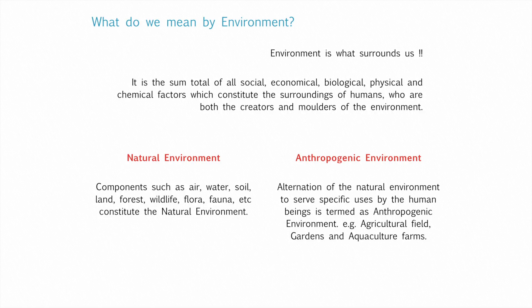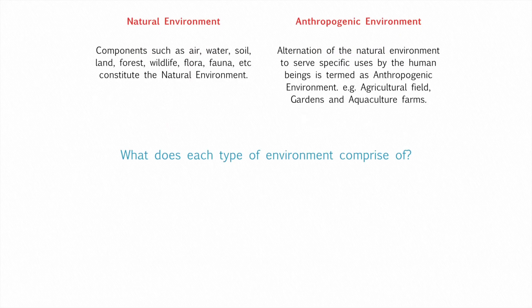Natural environment exists naturally, like air, water, soil, land, forest etc. Anthropogenic environment refers to manmade or alteration of the natural environment to serve a specific use by human beings. For example, agricultural fields, gardens and aquaculture farms etc.